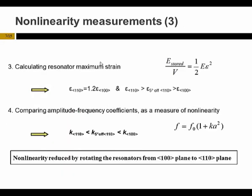We then calculated the resonator maximum strain through this equation, and finally calculated the amplitude-frequency coefficient as a measure of nonlinearity. Our results show that the amplitude-frequency coefficient for the 1-0-0 resonator is larger than for the 5-degree-off-1-1-0, which is larger than for the 1-1-0 resonator. This means nonlinearity is reduced by rotating the resonator from 1-0-0 toward 1-1-0 orientation.